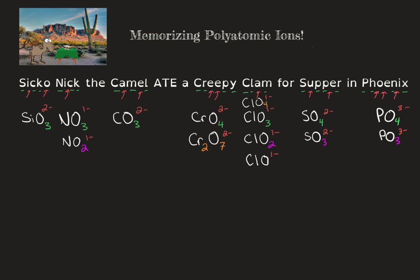Now what I can do is derive several more by adding hydrogens to these polyatomic ions. You need to know that when you add a hydrogen, a hydrogen ion is a positively charged ion, which means the charge is going to drop by one. So let's see how that plays out. I can add a hydrogen to carbonate, which is CO₃, 2−, and when I add a hydrogen, that charge is going to drop to a 1−.